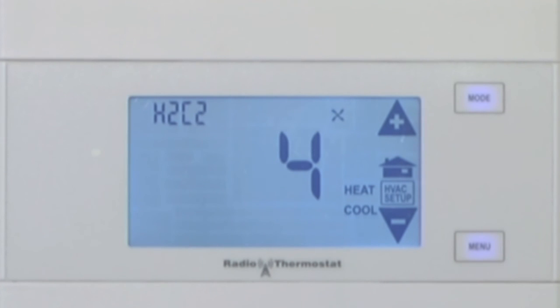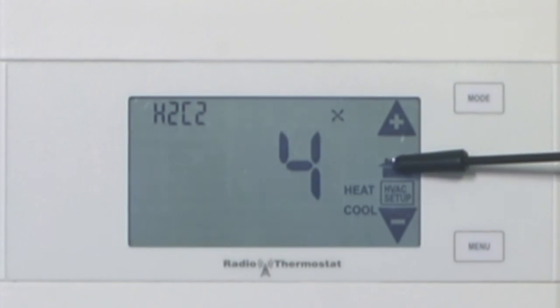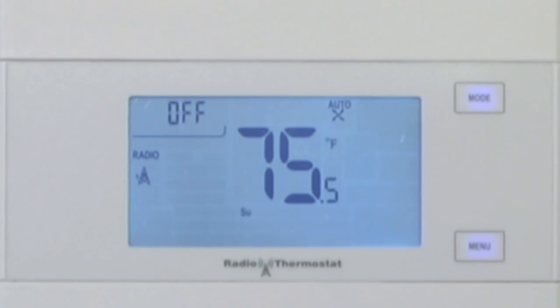So by setting up the HVAC setup, you're telling the thermostat what kind of system you have so it can control it appropriately. After you're done, you simply press the house button and you'll go back to your home screen.